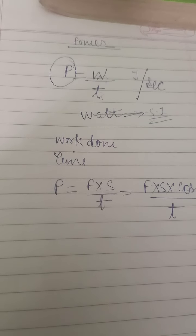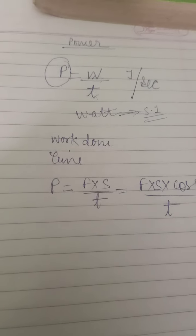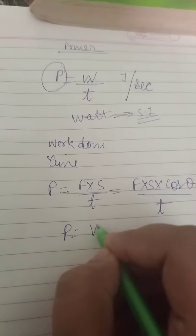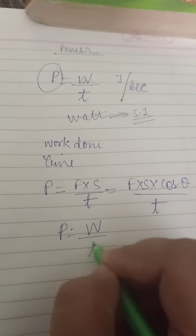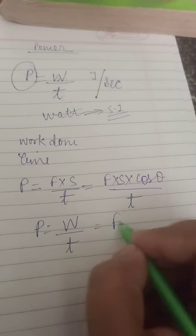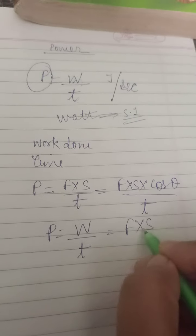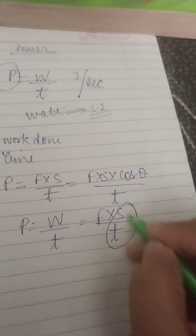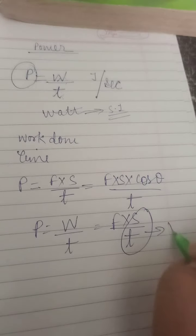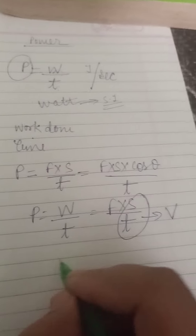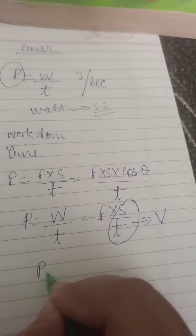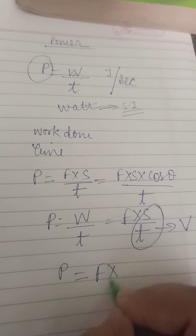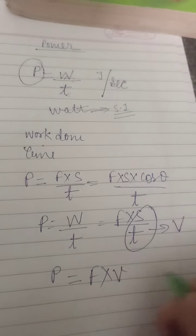As we know, P = W/T. Since W = F×S, we have P = F×S/T, and since displacement upon time is velocity, we get one more formula: power is equal to force into velocity, P = F×v.